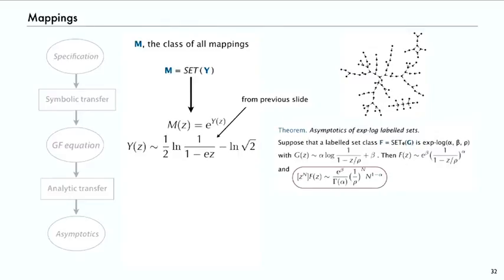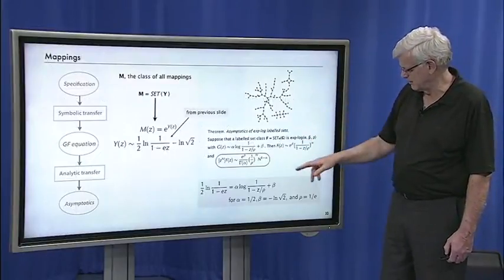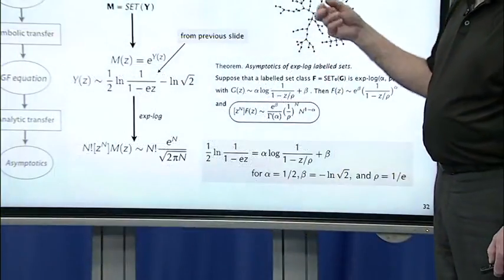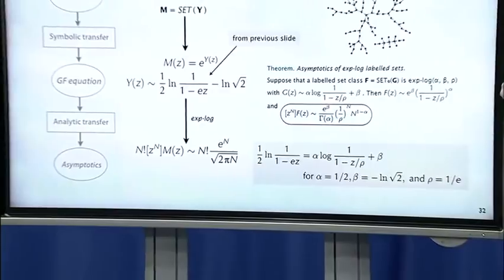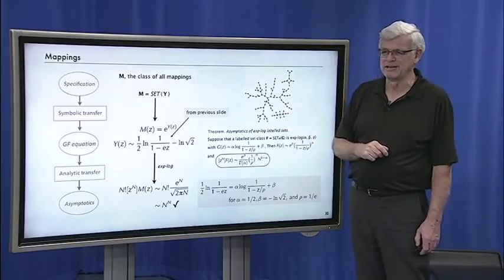So our theorem for X^log labeled sets says, if we're taking e to something that can be approximated to a log, we just have to know the constants. Coefficient of the log is one half. z/ρ, that's 1/e. And beta is minus log 2. So those three values, plug those in and we immediately get the asymptotics of the class of all mappings. Alpha equals one half, beta equals log√2, rho equals 1/e. And we get the number of mappings as asymptotic to n!·e^n/√(2πn).